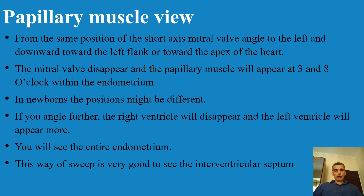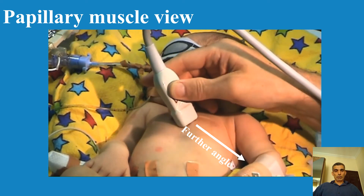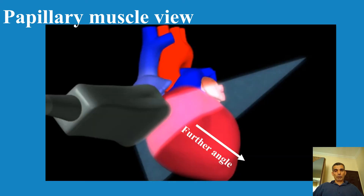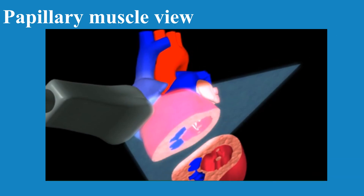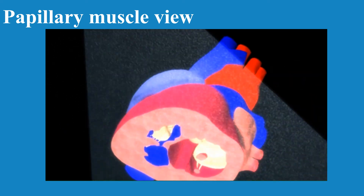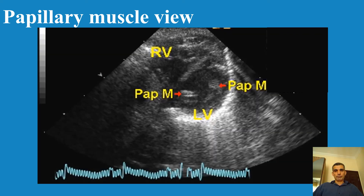To see the papillary muscle and ventricle level, angulate further down and to the left by moving the transducer up and to the right. This avoids the mitral valve and brings you to the ventricular level where you can assess the papillary muscles and both ventricles in short axis.